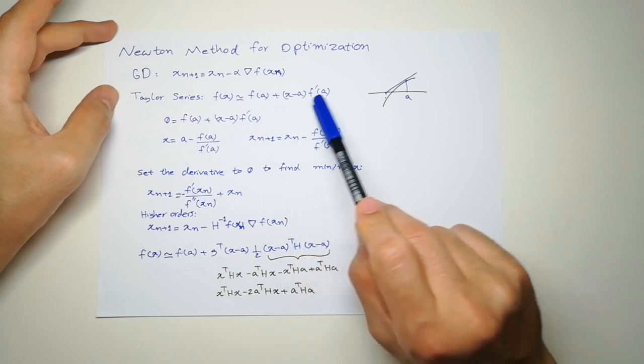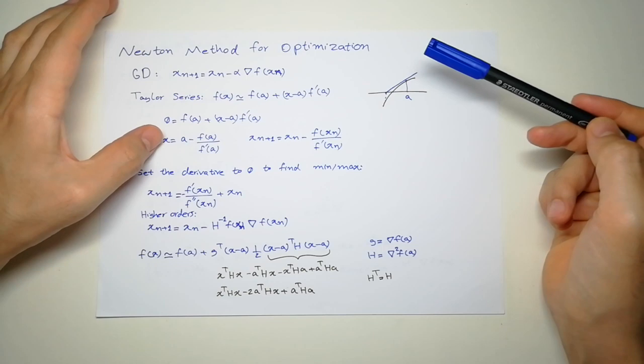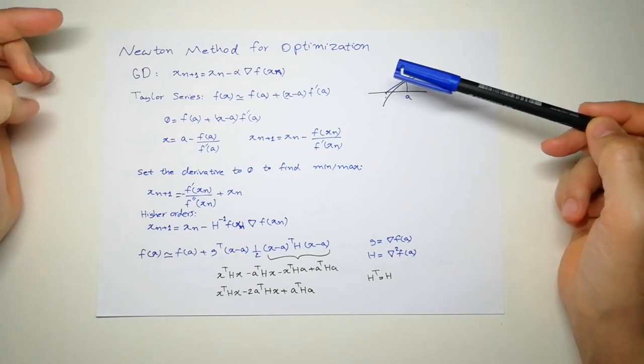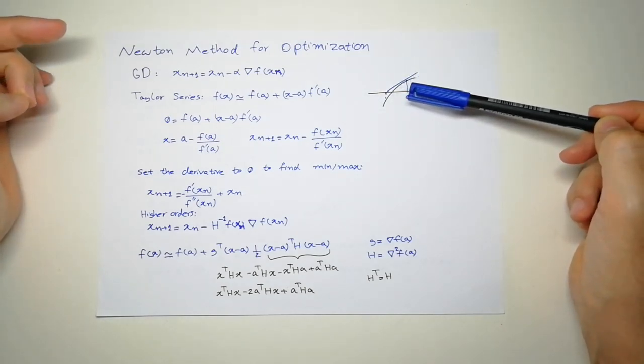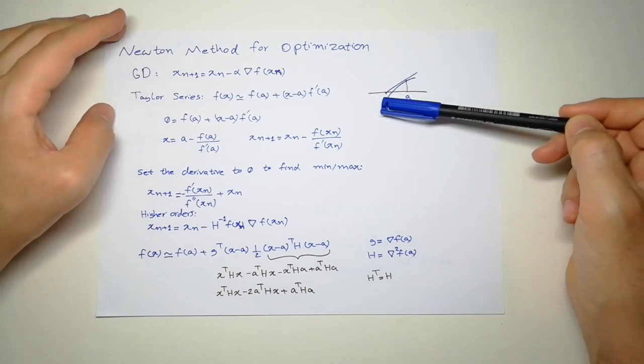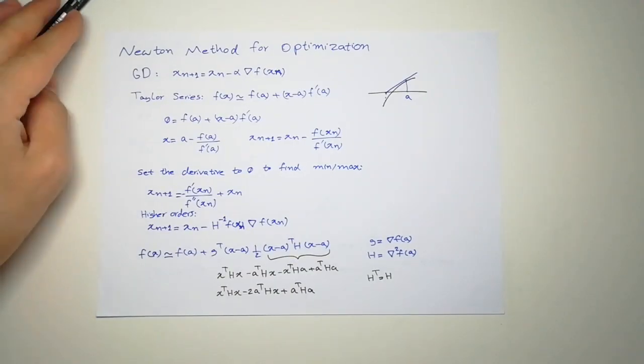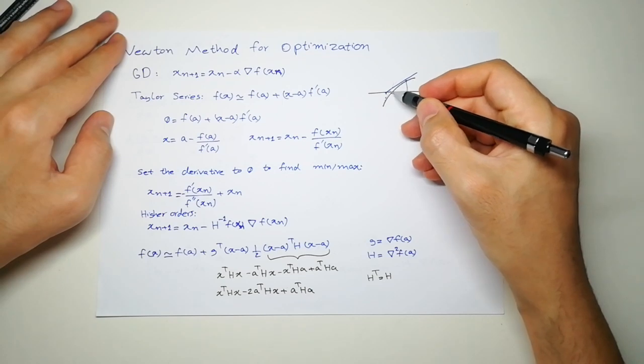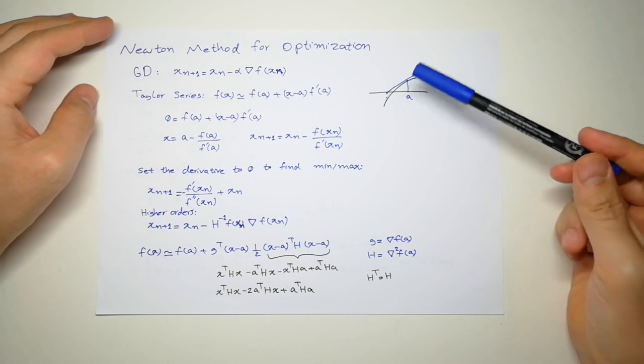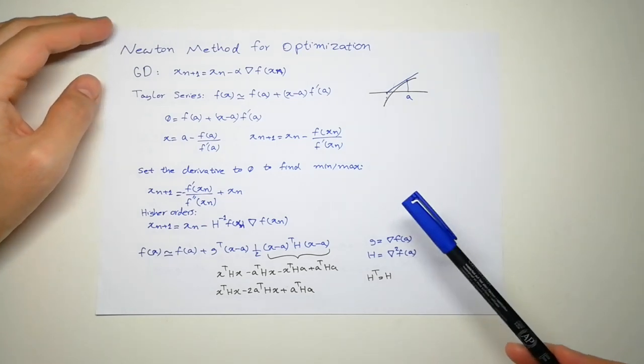I will get x as a minus the value of the function on that point over the derivative. So a was the start point, and this x is my new point. So if I start again, draw a derivative on this point, which is going to be something like this. As you can see, I'm getting closer and closer to the point zero. So it's an iterative approach, and the next point is always going to be previous point minus this.